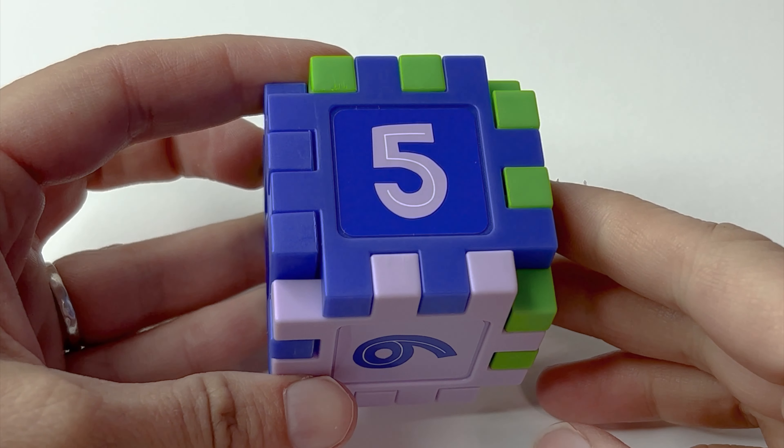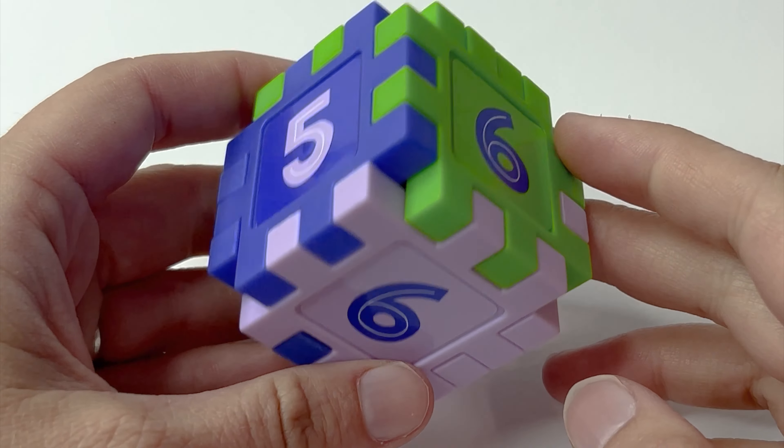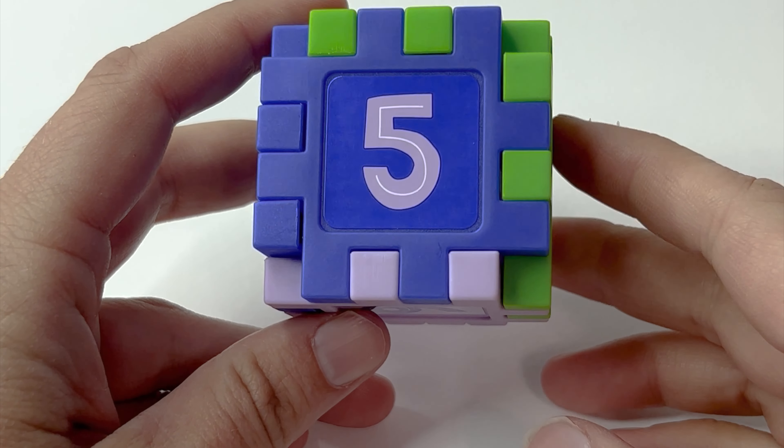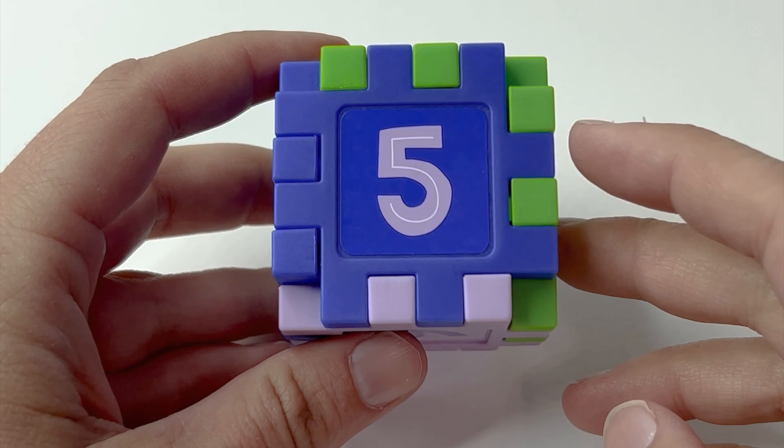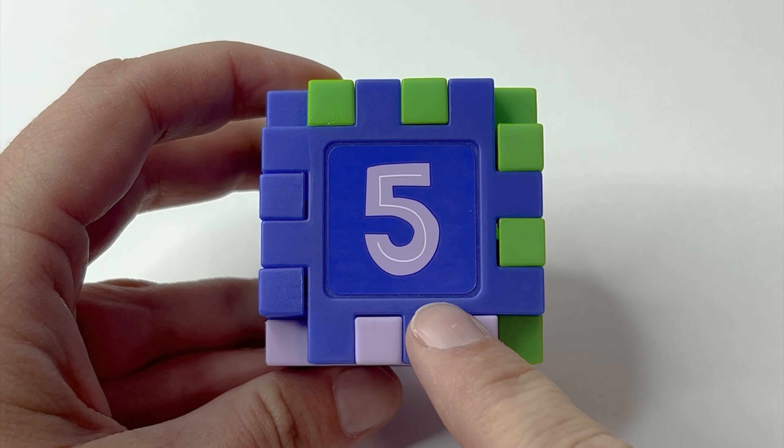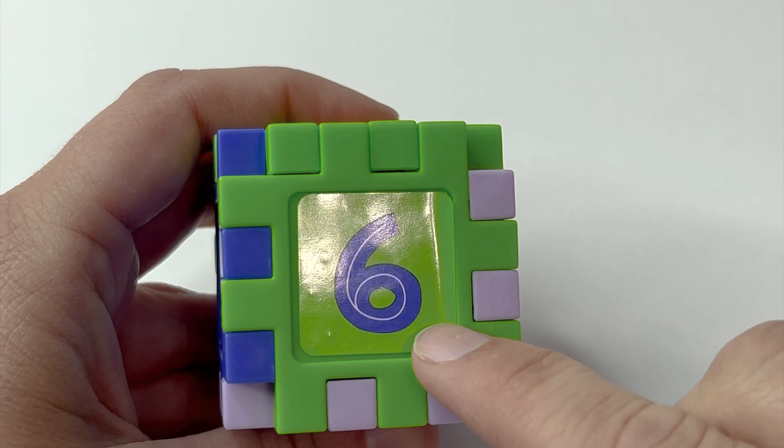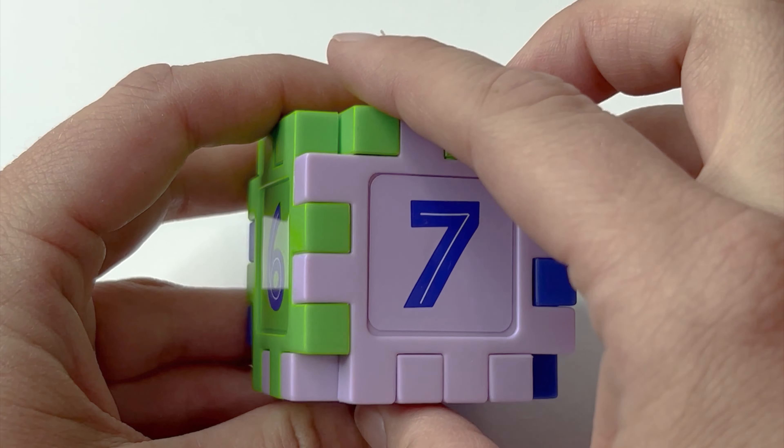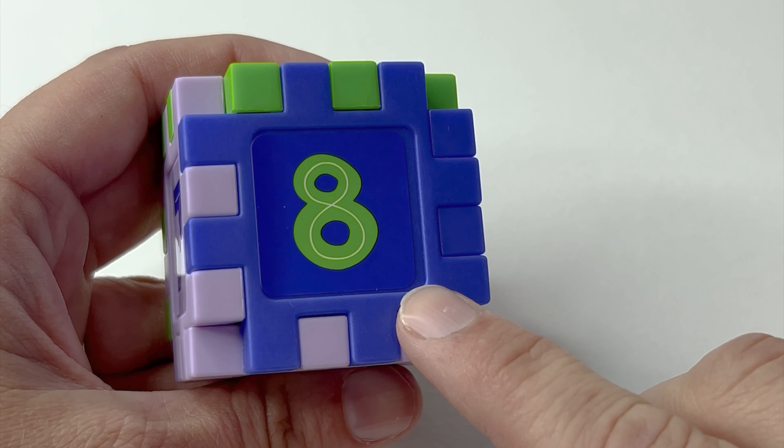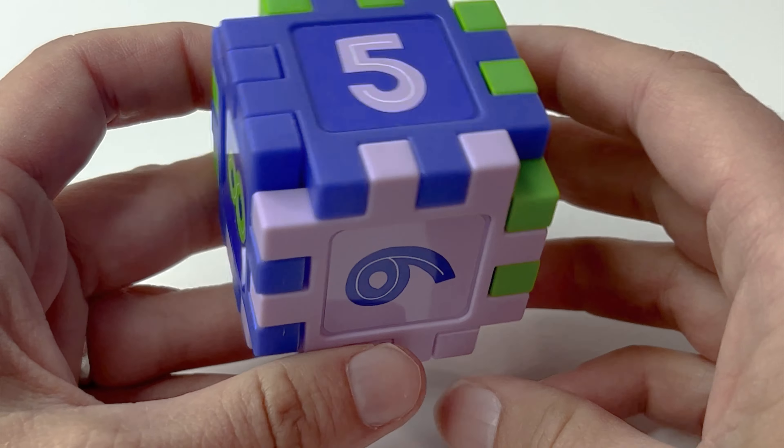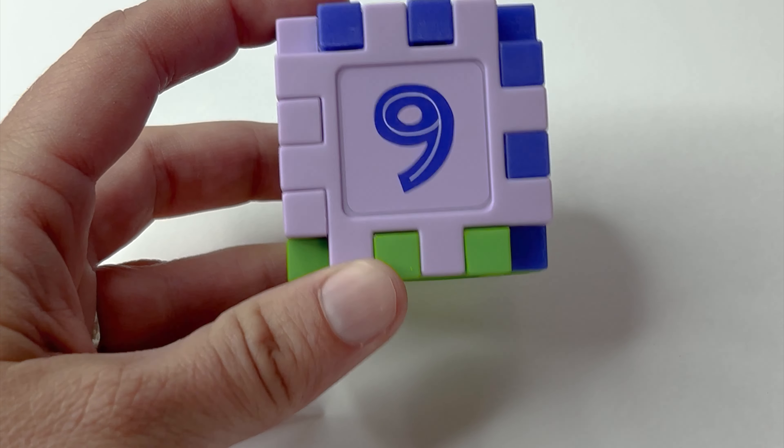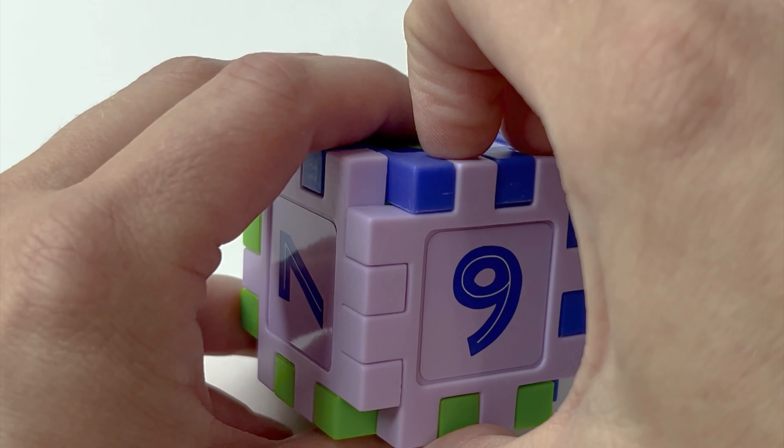All righty, learners. Our last number cube ended with four, and now look, we have another hidden surprise. But again, I need your help. Help me say these numbers and then we can open our box up. Do you remember this one? Five. Six. Seven. Eight. Great job. And nine. We made it to nine. Now we get to open up and see what's hidden inside our magical number box.